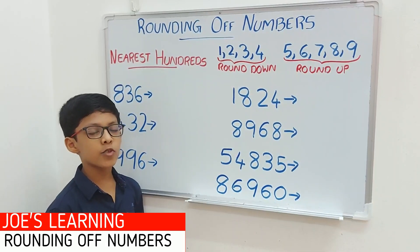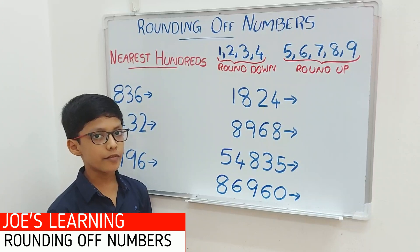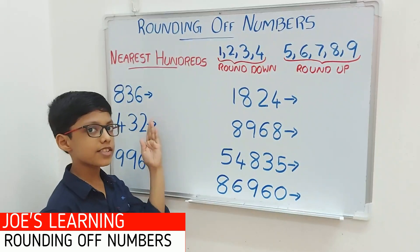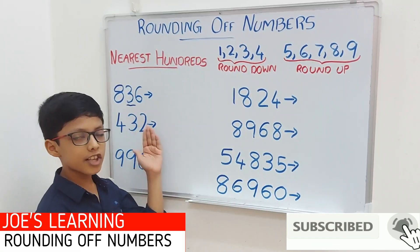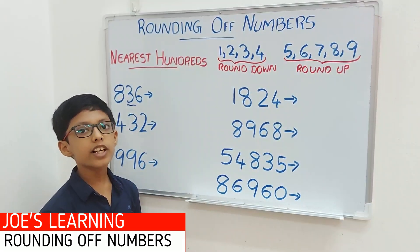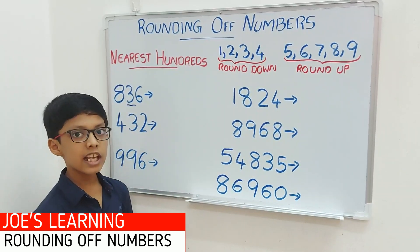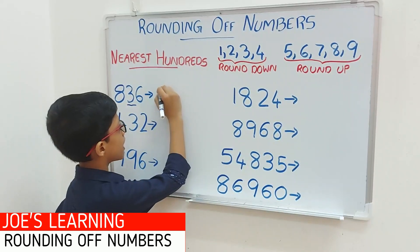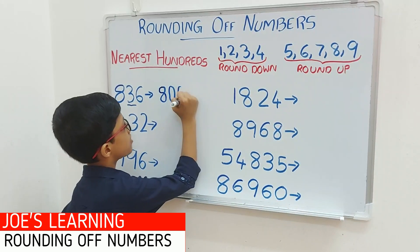Let's understand how to round off a number to the nearest hundreds using some examples. My first example is 836. We need to first look at the digit in the tens space — 3 is in the tens space. We compare it with 5: 3 is lesser than 5. So we have to put a 0 in the ones and tens space, leaving the rest of the digits as it is. So 836 rounded off to the nearest hundreds equals 800.